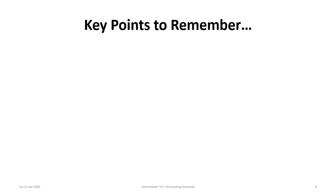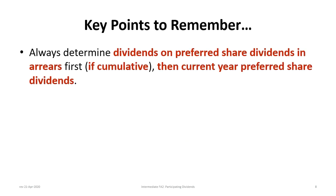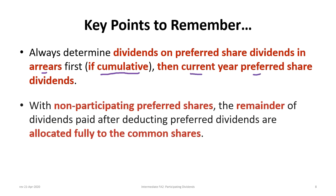Let's wrap up with key points to remember. First, always determine dividends in arrears first — but only if the preferred shares are cumulative. Then determine the current year preferred share dividends. With non-participating preferred shares, the remainder of dividends paid after deducting preferred dividends is allocated fully to the common shareholders.